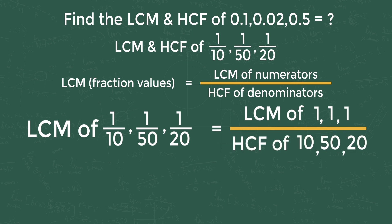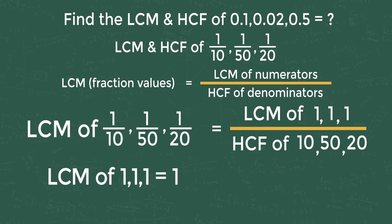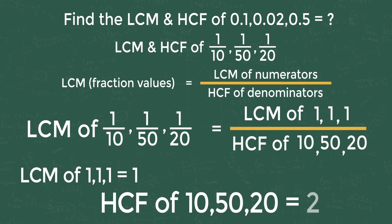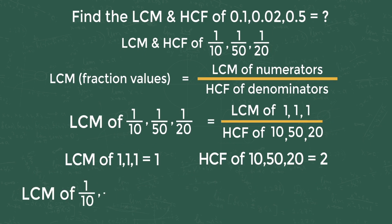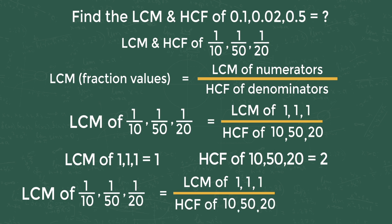If you don't know how to find LCM and HCF of numbers quickly, please watch the previous videos. LCM of 1, 1, 1 is equal to 1. HCF of 10, 50, 20 is equal to 2. So LCM of 1/10, 1/50, 1/20 equals 1/2, that is 0.5. This is simple if you know the trick.